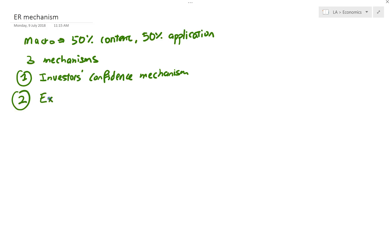The second mechanism is what I will go through in this video — the exchange rate mechanism. Every time you see an exchange rate change, you will think of three things, which I'll go through today with one to two examples that have been tested as case studies. The third mechanism, which I'll go through in a later video, is the interest rate mechanism.